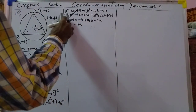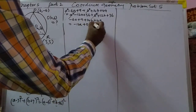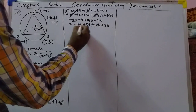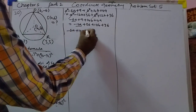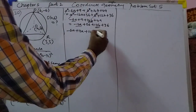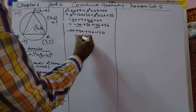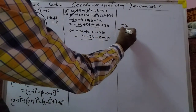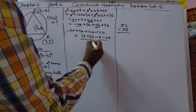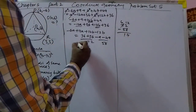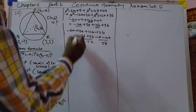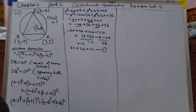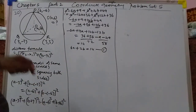Grouping terms: minus 6A plus 2·1·A (the 2A terms), and for B: 14B minus 12B, then constants 36 plus 36 minus 9 minus 49. So it will become — after simplification — 6A plus 2B is equal to 14. That gives us equation 1.